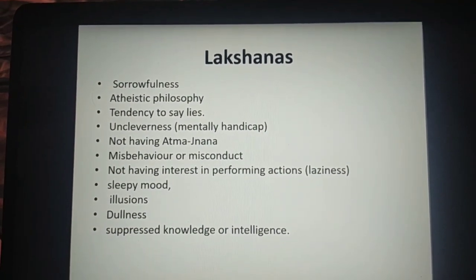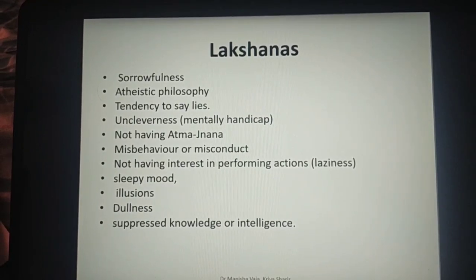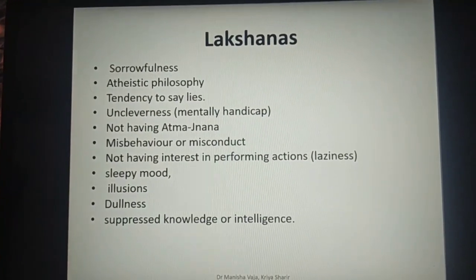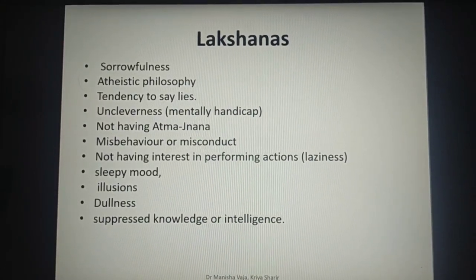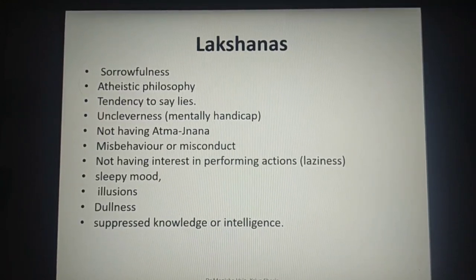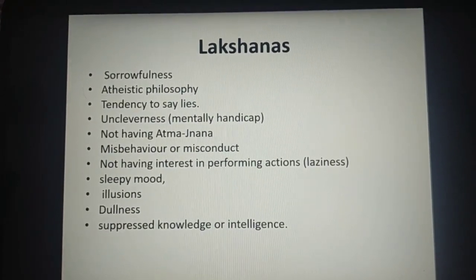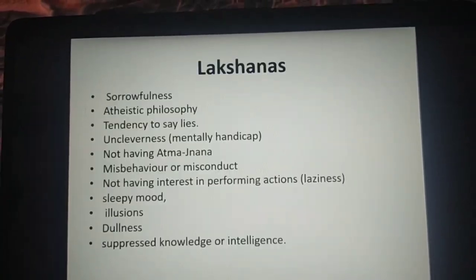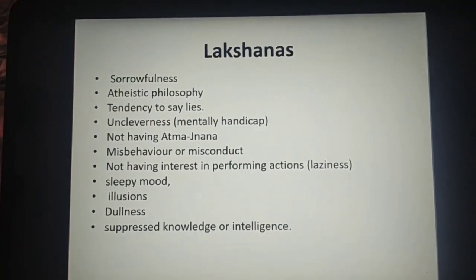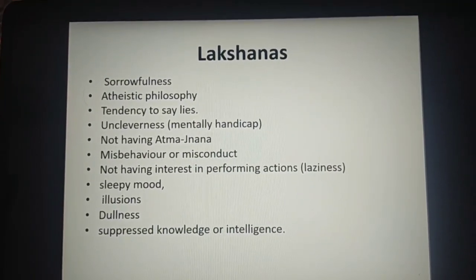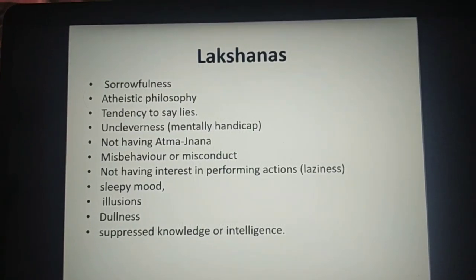If a person has the predominance of Tamogun, the characteristics include: sorrowfulness, aesthetic philosophy, tendency to say lies, uncleverness, lack of Atma Jnana, misbehavior or misconduct, lack of interest in performing actions (laziness), sleepy mood, illusions — meaning wrong or misinterpreted perception of a sensory experience, or false ideas and beliefs — dullness, and suppressed knowledge or intelligence.